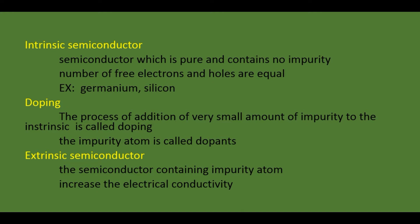The first concept is intrinsic semiconductor. A semiconductor which is pure and contains no impurity is called the intrinsic semiconductor. Here the number of free electrons and holes are equal. Examples of this type of semiconductor are germanium and silicon. So intrinsic semiconductor means pure semiconductor.